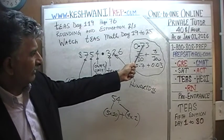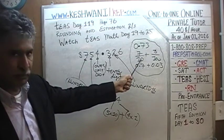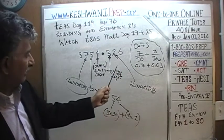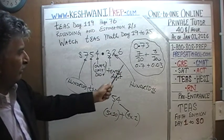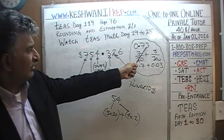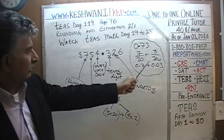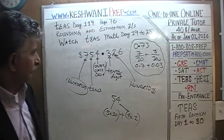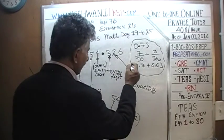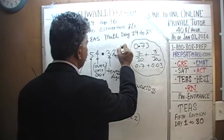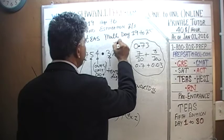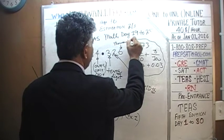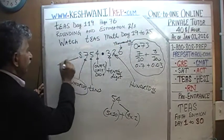So in 0.73, how many tenths do we have? We have 7 tenths. How many hundredths do we have? We have 3 hundredths. And continuing further after the decimal, the next position is the thousandths digit — with T-H. And before the decimal, the corresponding position is the thousands digit.